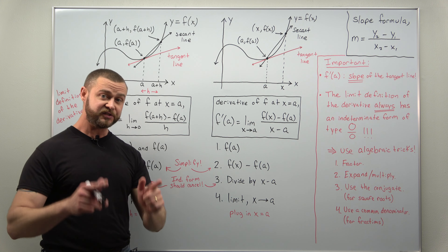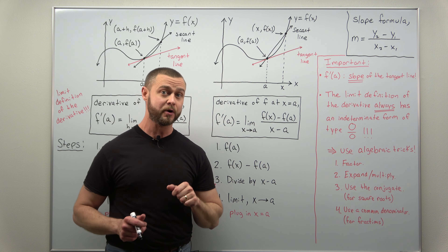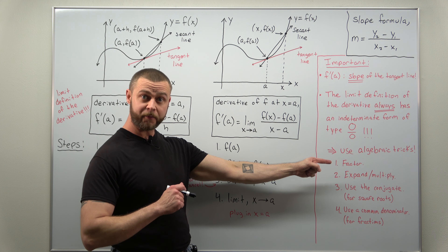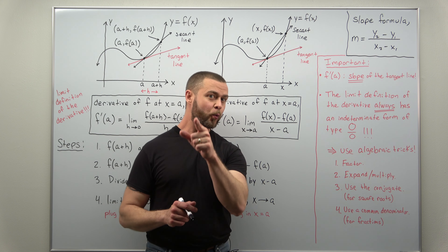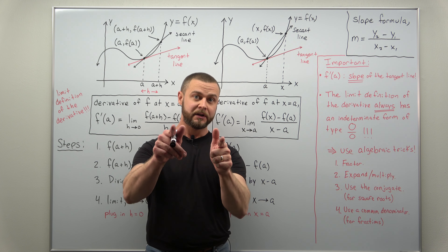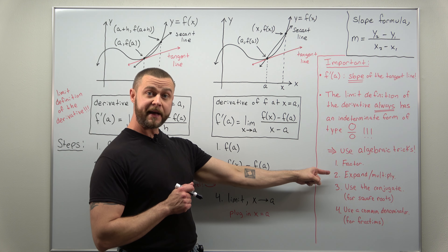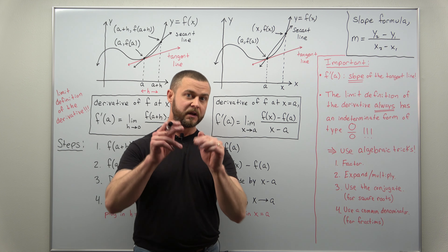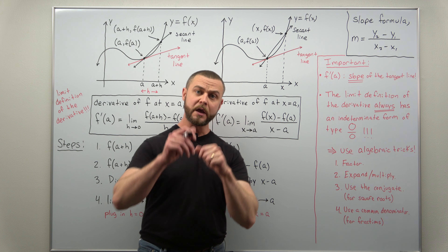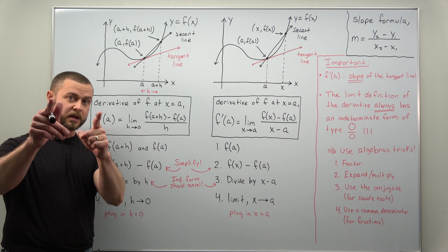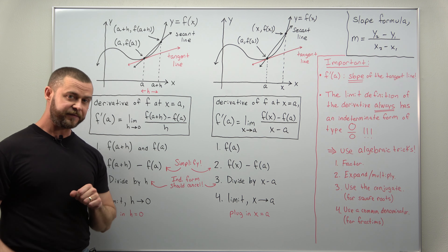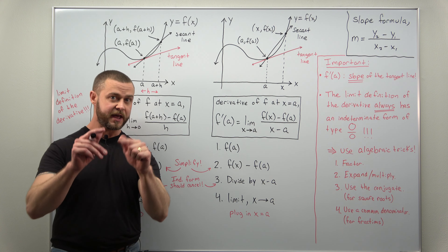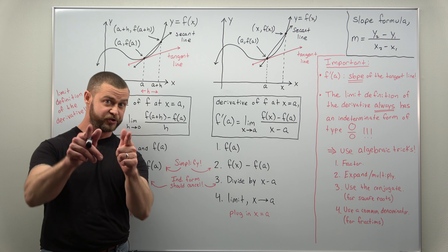Recognizing that you always get an indeterminate form of type zero over zero is important because the questions you encountered right before this involved limits with indeterminate forms of type zero over zero, and you had four standard algebraic tricks: you can factor, expand or multiply, use the conjugate if there are square roots, or use a common denominator if you're adding or subtracting fractions. All of those algebraic tricks come back in calculating the limit definition of the derivative.